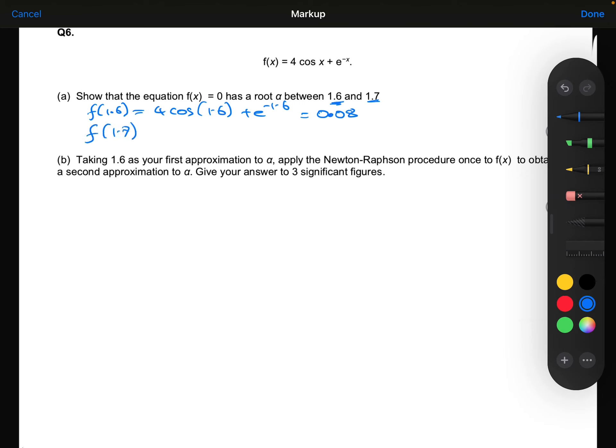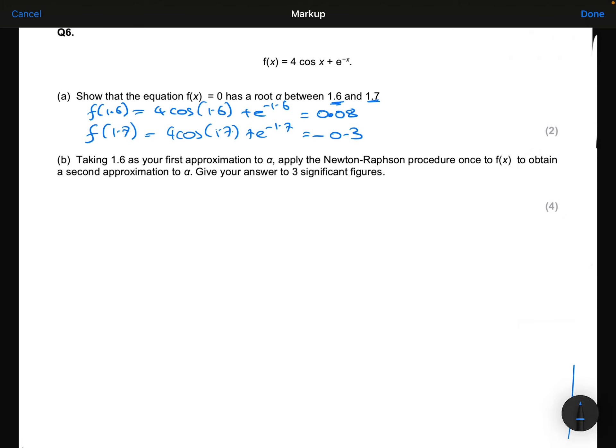Now doing 1.7. 4 cos 1.7 plus e to the minus 1.7 gives minus 0.3. We have a sign change in the continuous function, so there must be a root in the interval between 1.6 and 1.7.